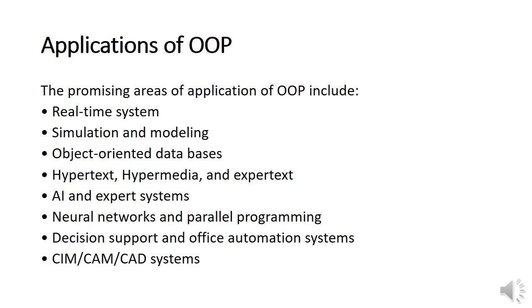The major application areas of object-oriented programming are: real-time systems, simulation and modeling, object-oriented databases, hypertext, hypermedia and expert text, AI and expert systems, neural networks and parallel programming, decision support and office automation systems, CAM/CAD systems, etc. This is the end of the video tutorial on object-oriented programming in C++, and also the end of Module 4 of Computer Programming and Computational Techniques. Thank you.